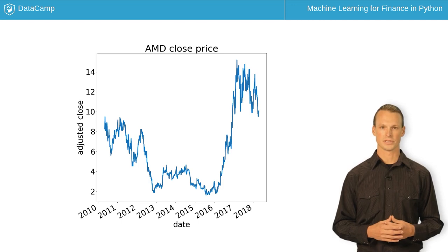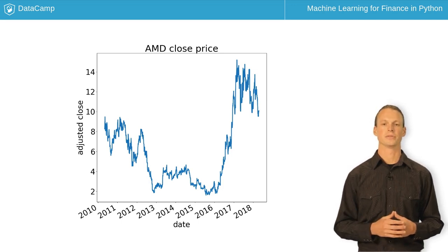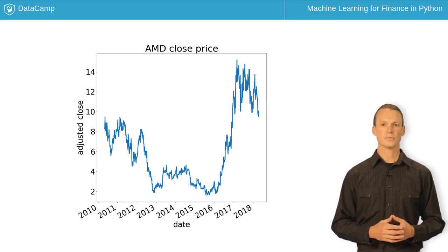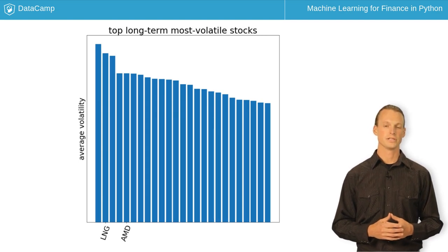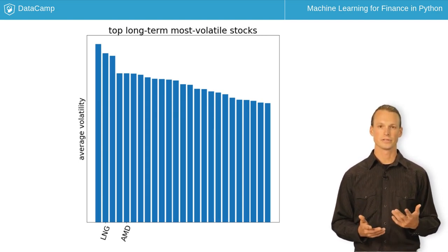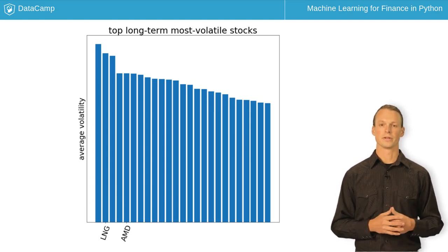Most data we'll use is stock prices, like the price of AMD stock shown here. We'll use many machine learning methods to predict future prices and select stock portfolios. In this course, we'll use a few stocks, including LNG and AMD. These are highly volatile, meaning their price moves around a lot.